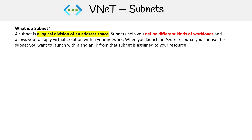A subnet is a logical division of an address space — we're cutting it up one step further. Subnets help you define different kinds of workloads and allow you to apply virtual isolation within your network. When you launch an Azure resource, you choose the subnet you want to launch within, and an IP from that subnet is assigned to your resource.